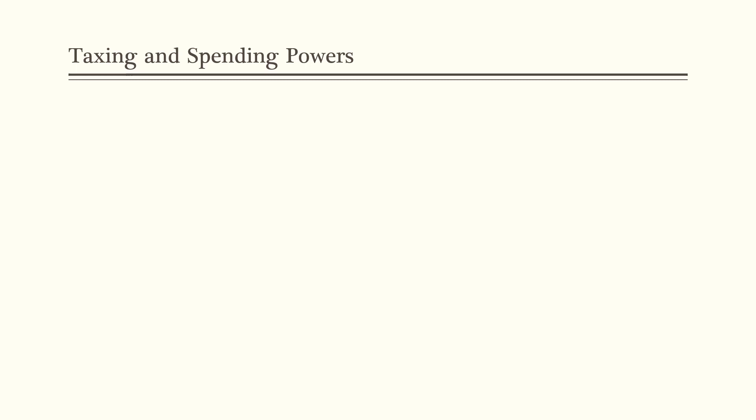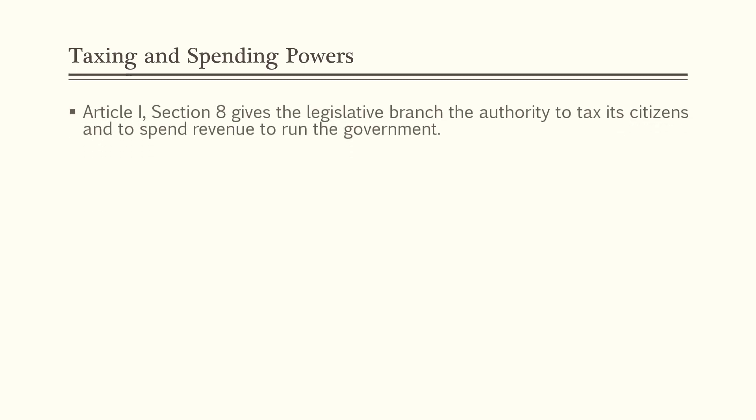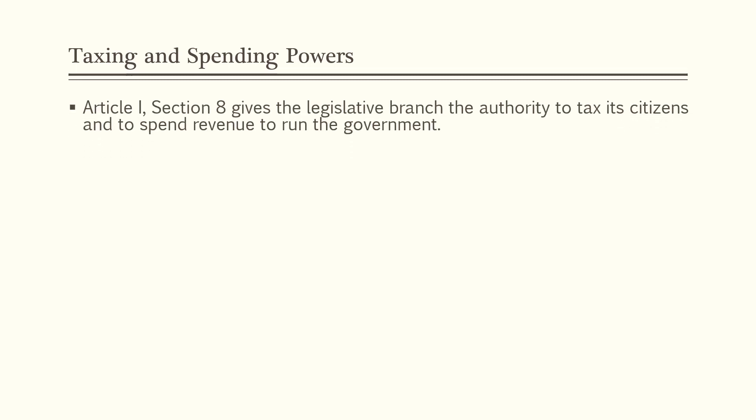Let's examine Congress's taxing and spending powers. Article 1, Section 8 gives the legislative branch the authority to tax its citizens and to spend revenue to run the government. You might recognize Article 1, Section 8 — it's also where the Commerce Clause is located.